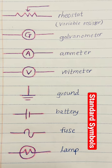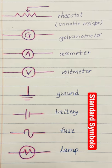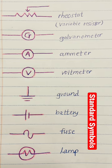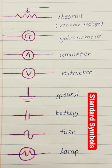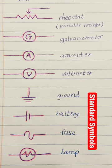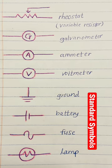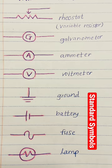Ground to show that it's a zero potential. Battery is basically the voltage applied to the circuit. Fuse in the circuit is the device which is used for protection when there is a short circuit.